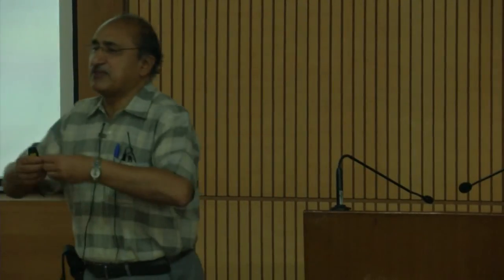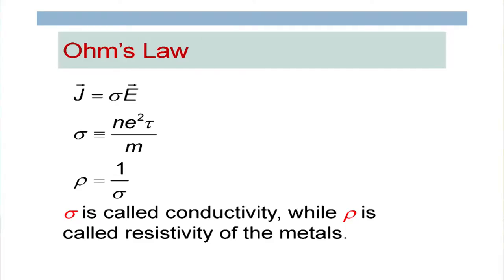Normally Ohm's law is given in the form V = IR, but from the point of view of solid state physics, current density is more important than current, field is more important than voltage, and resistivity or conductivity is more important than resistance — because resistance depends on the shape of the sample. If you convert the electric field into potential and take a particular shape of material, the same thing can be written as V = IR.